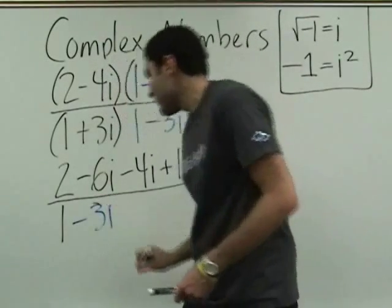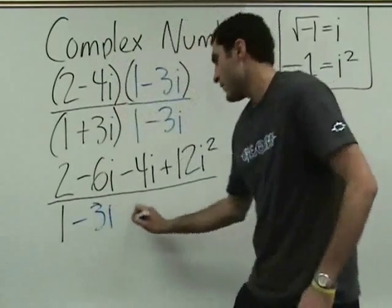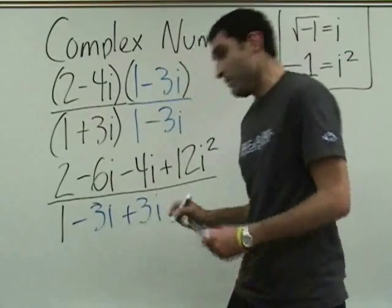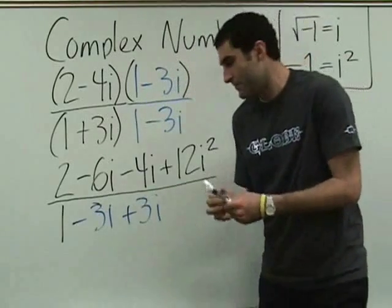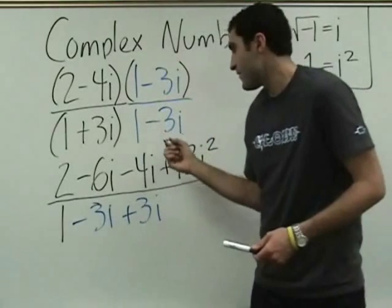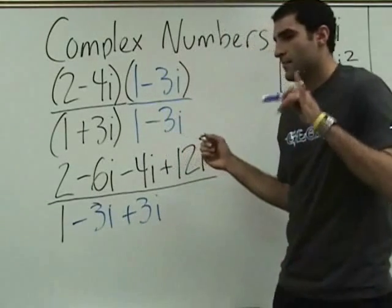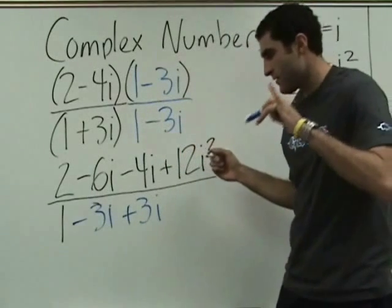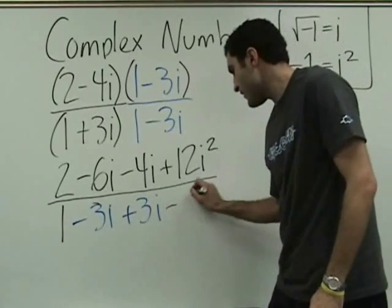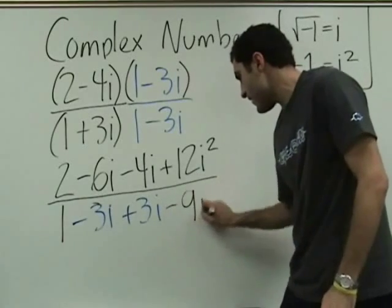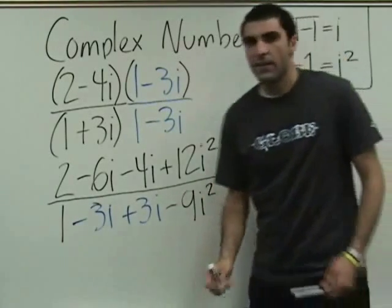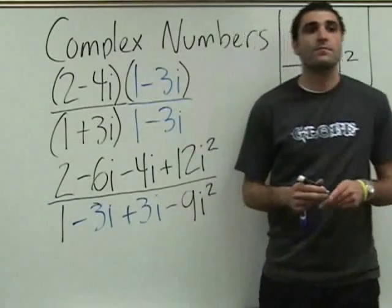Minus 3i and plus 3i — why did he write it in blue? Because they canceled. Keep going: minus 9i squared. Good correction — it's minus 9i squared. They cancel.